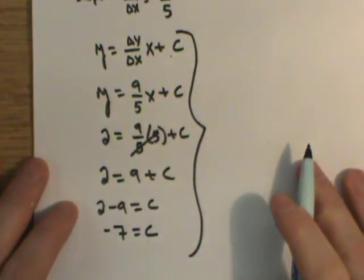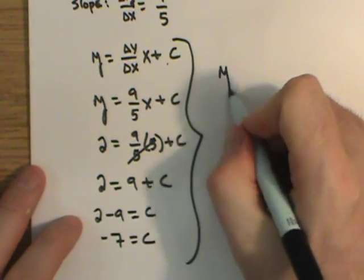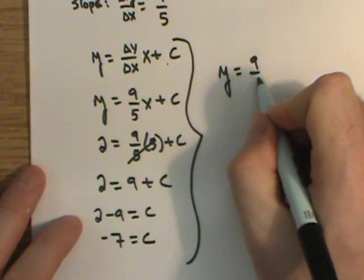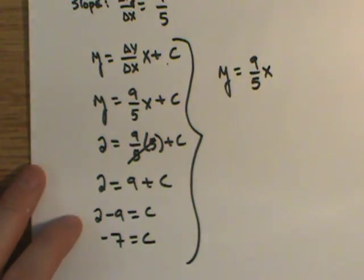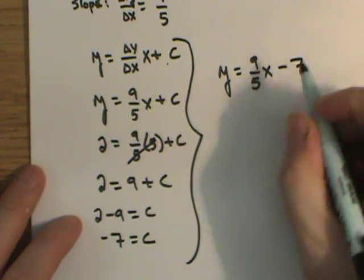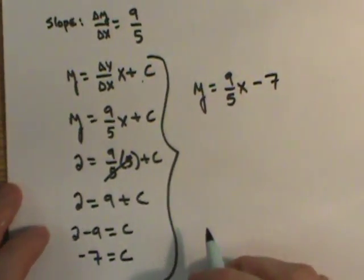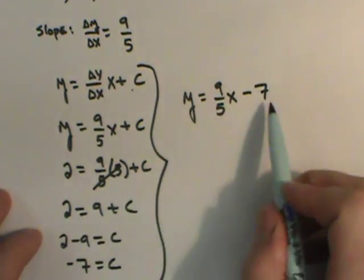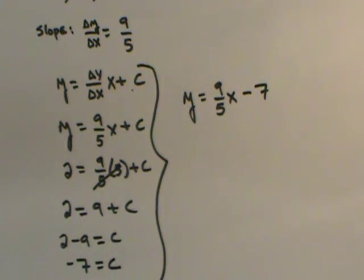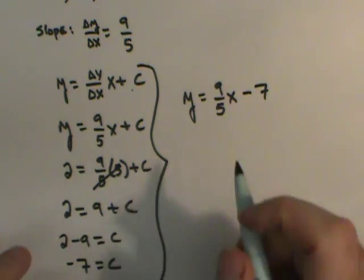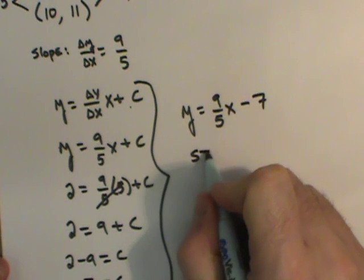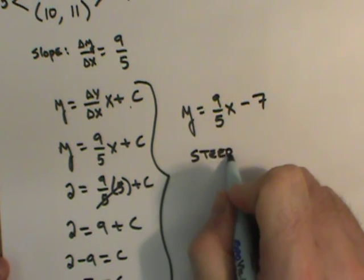This gives me my equation. I can now say y equals 9 fifths x minus 7. As I describe that, I'm looking at this equation. It's the slope. It's the intercept. I can predict what the line looks like. It should be a steep incline.